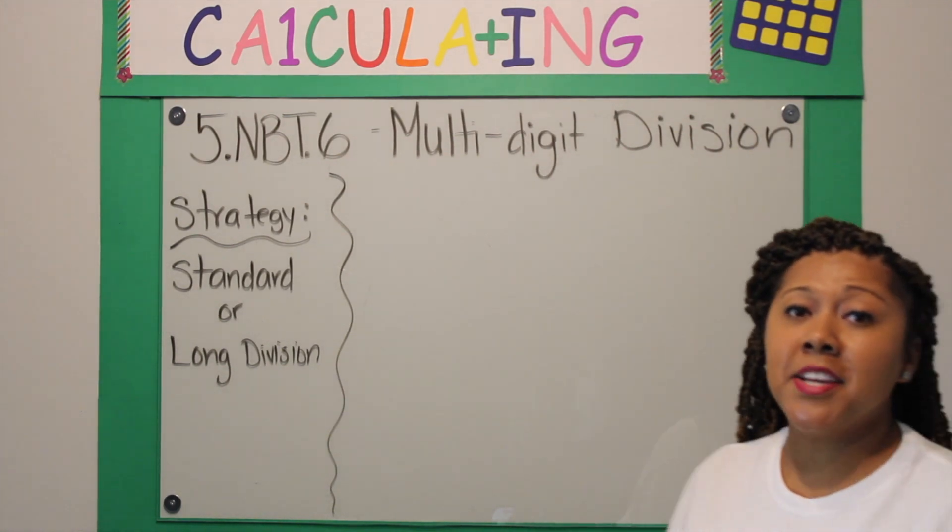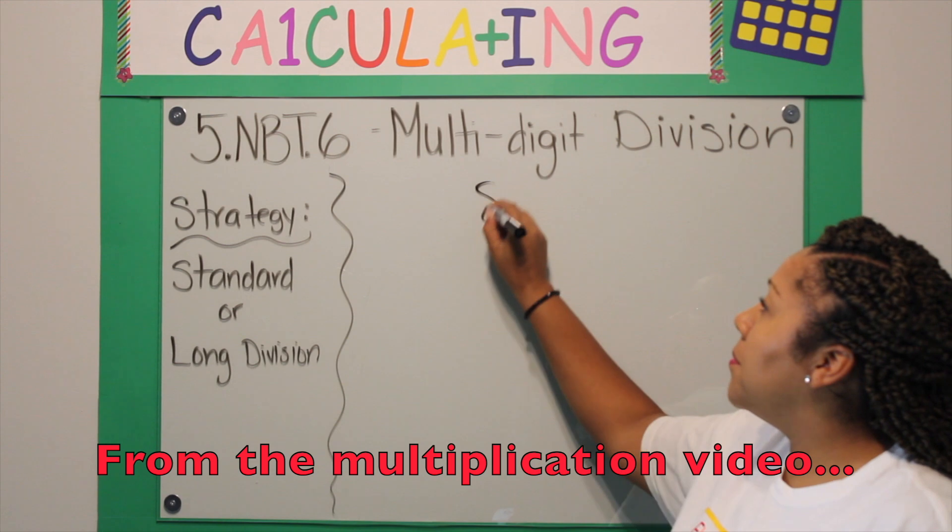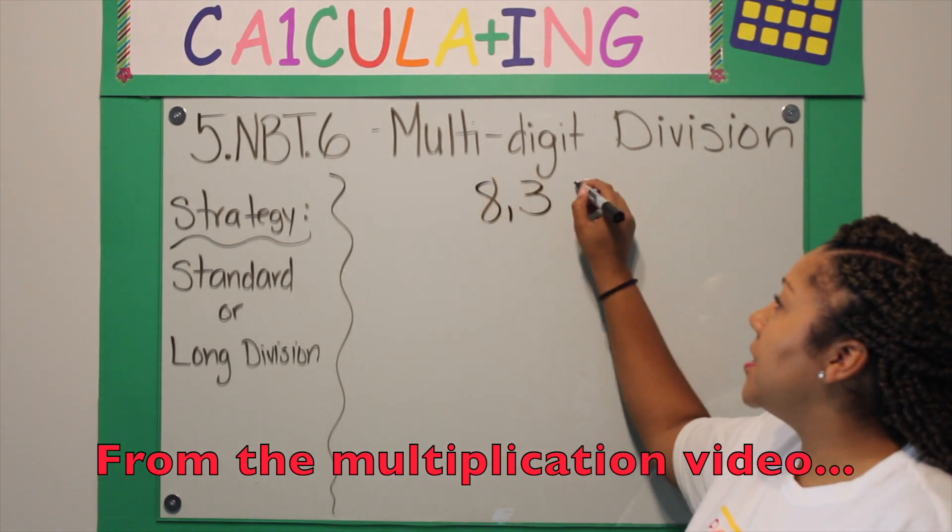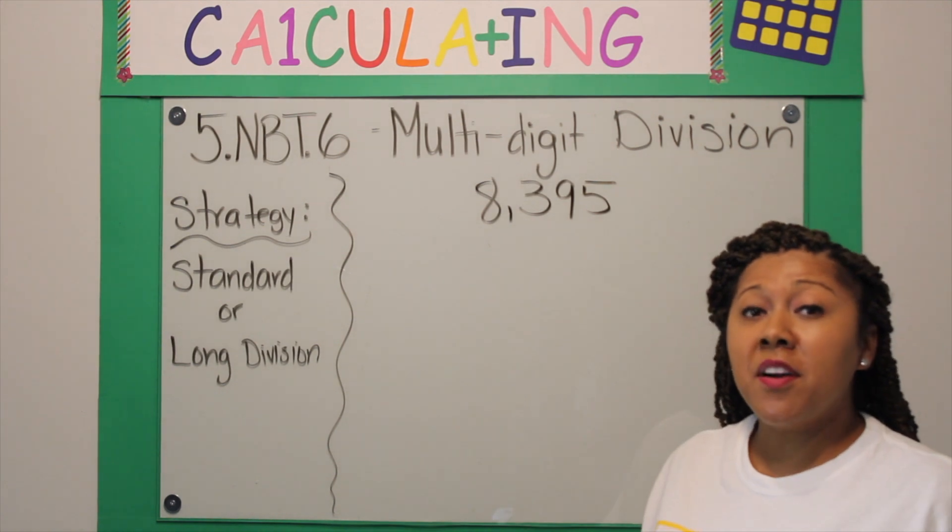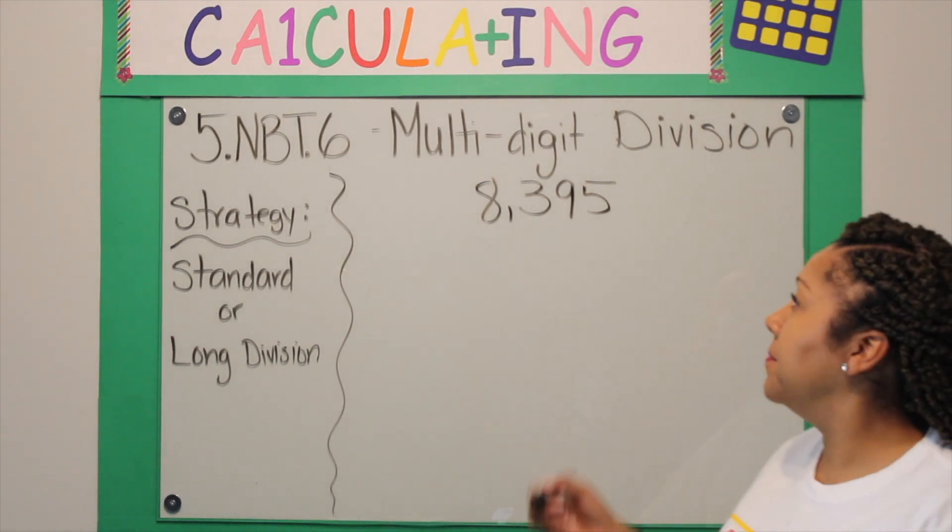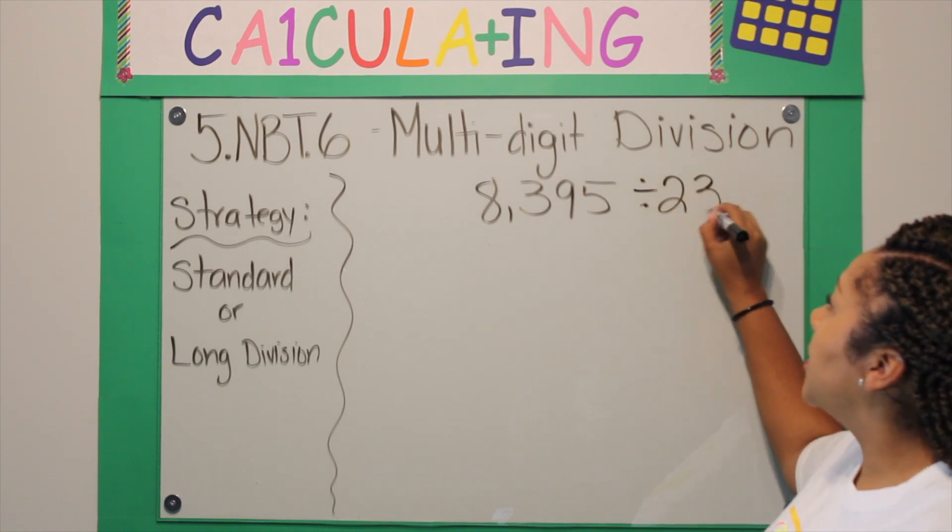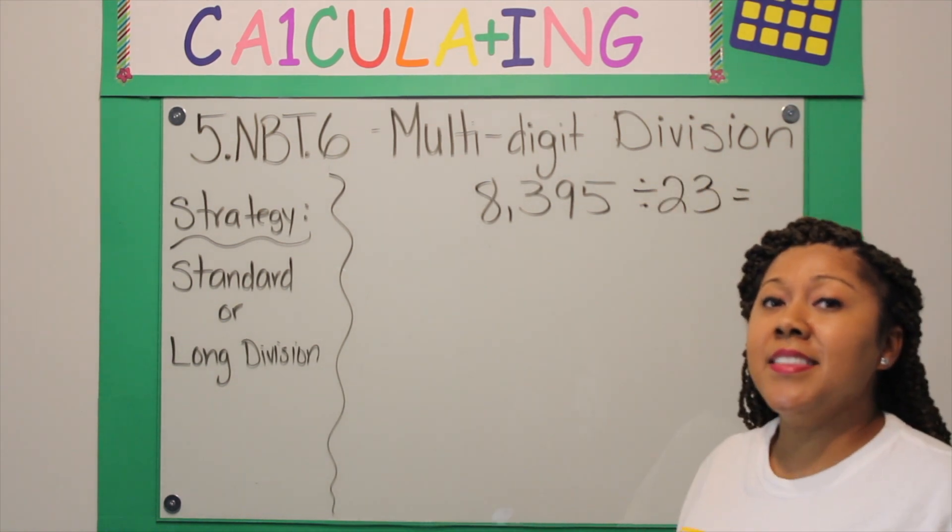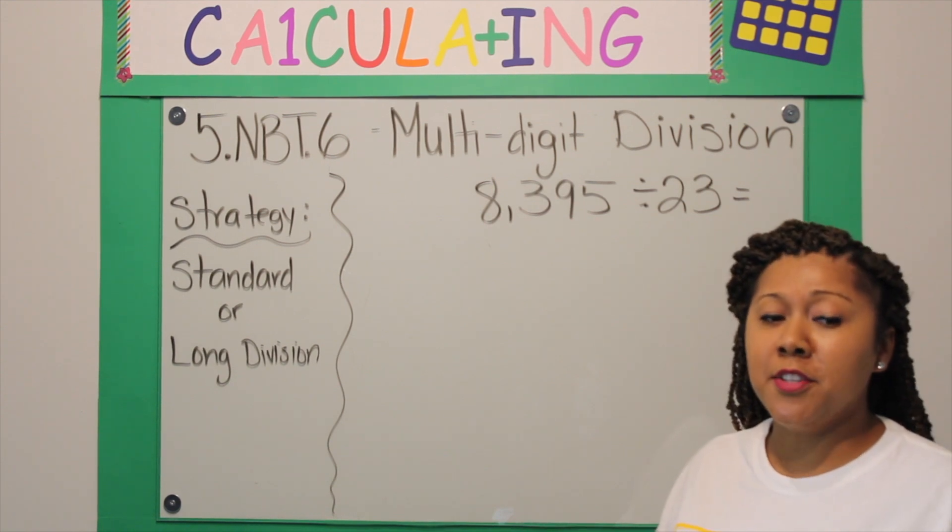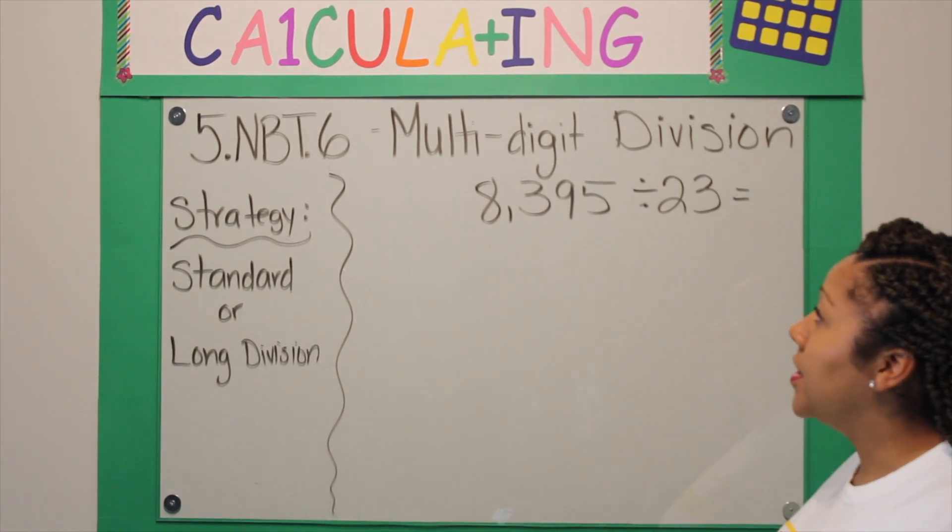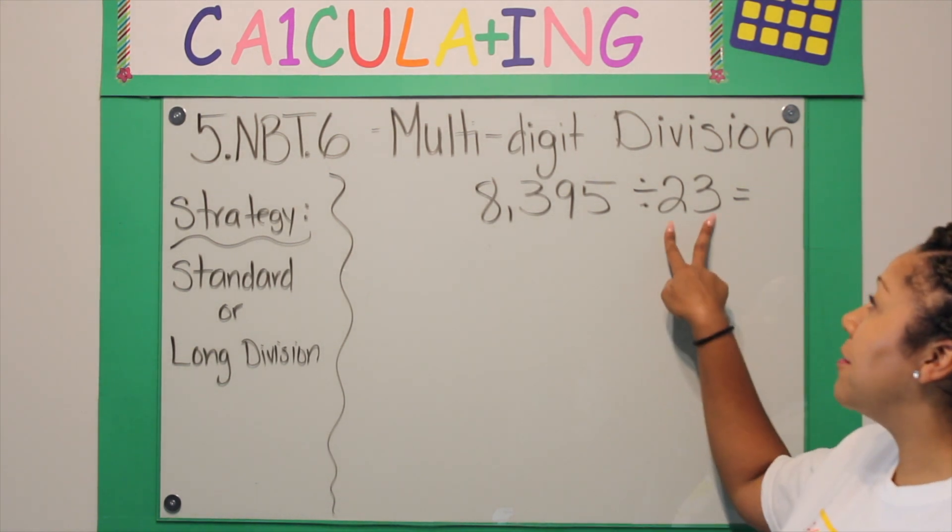I'm going to show you how multiplication and division are related. Our last answer when we multiplied was 8395, and one of our factors was 23. So I am going to show you that if I divide these, I will get my second factor, which should be 365.